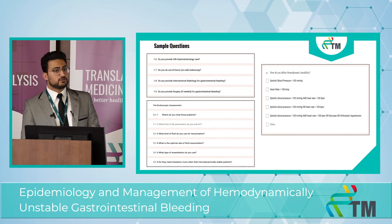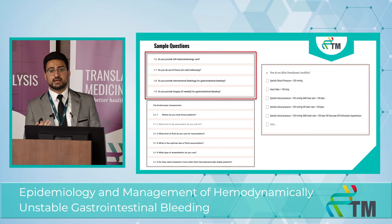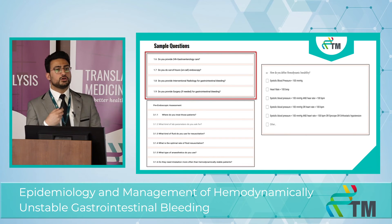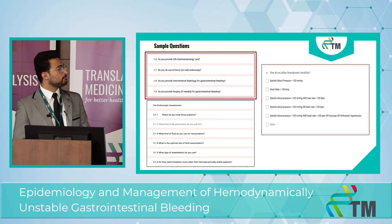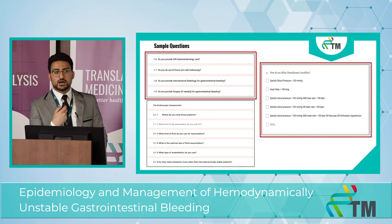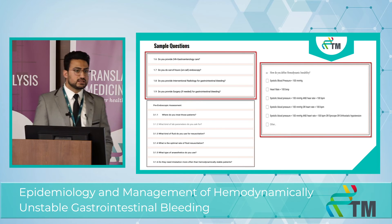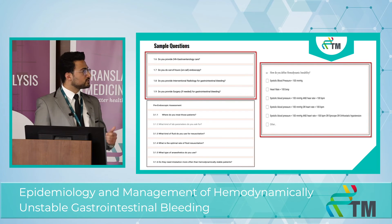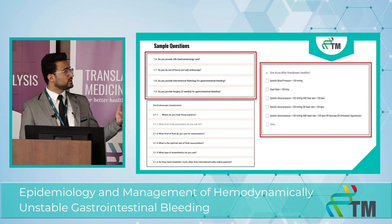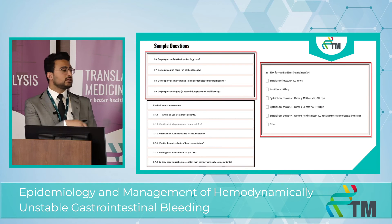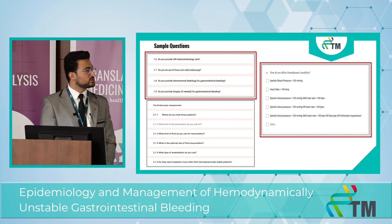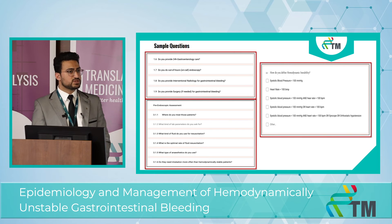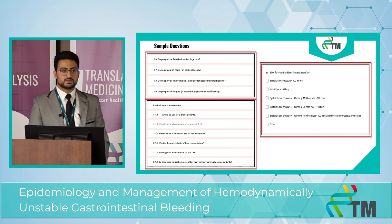Sample questions from the questionnaire: in section one, we ask whether hospitals provide 24-hour gastroenterological care, interventional radiology, on-call endoscopy, or surgery for GI bleeding. In section two, we ask how doctors define hemodynamic instability — for example, the most common definition is systolic blood pressure less than 100 and heart rate more than 100, though some studies use either criterion alone, and others include syncope and orthostatic hypotension. In section three, the pre-endoscopic assessment explores whether patients are treated in the ICU, what lab parameters are ordered, and what type of fluid resuscitation is used.